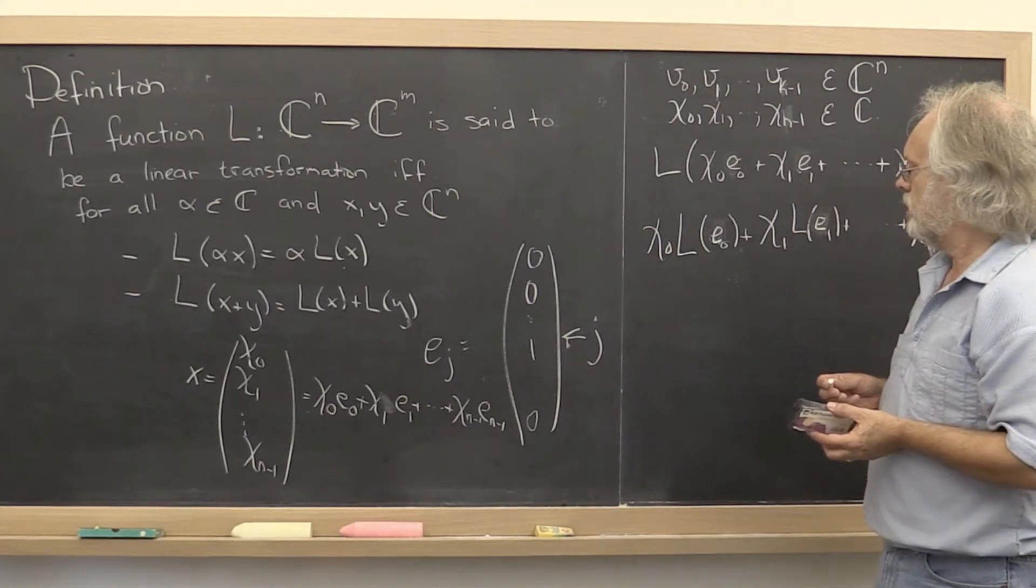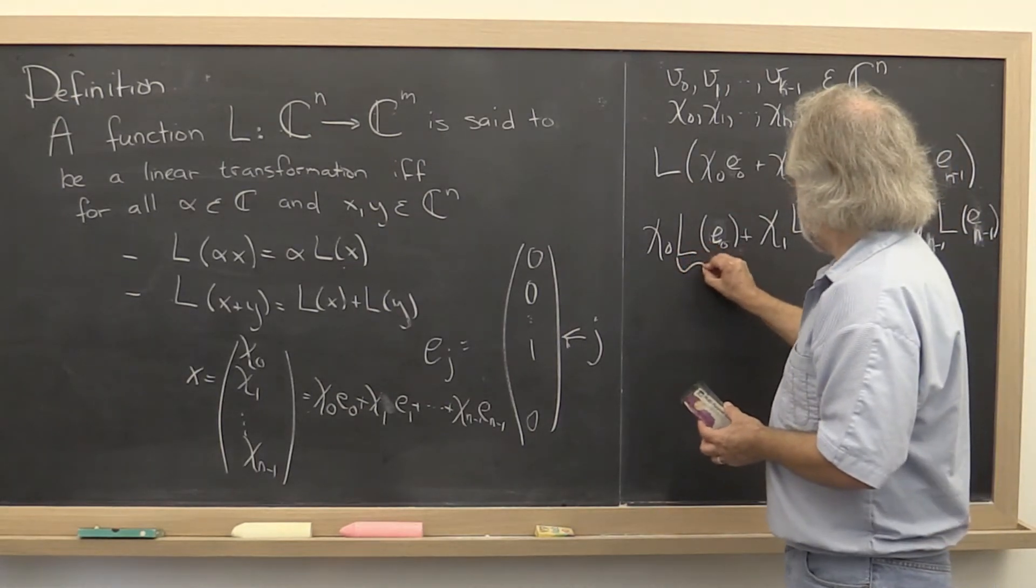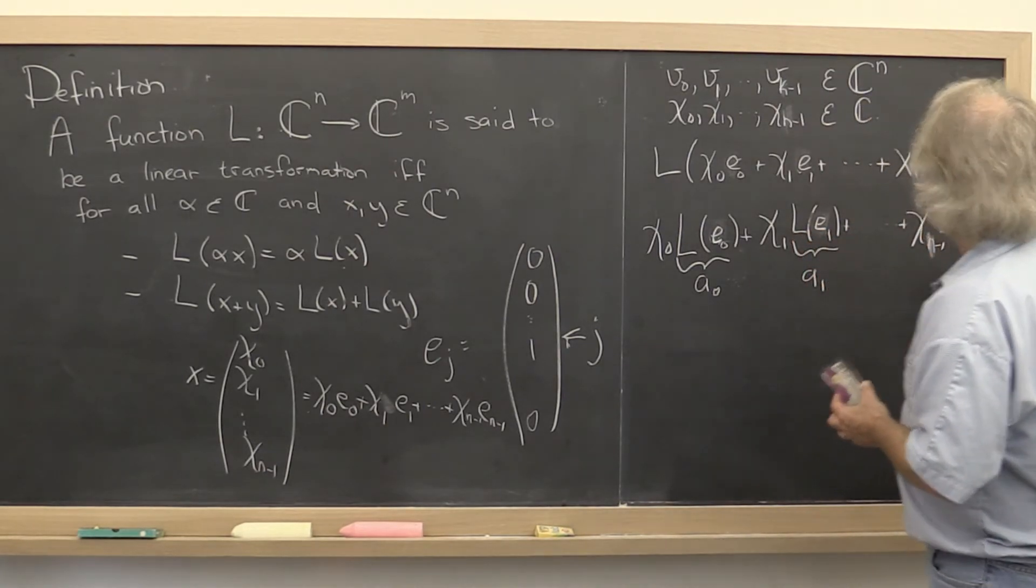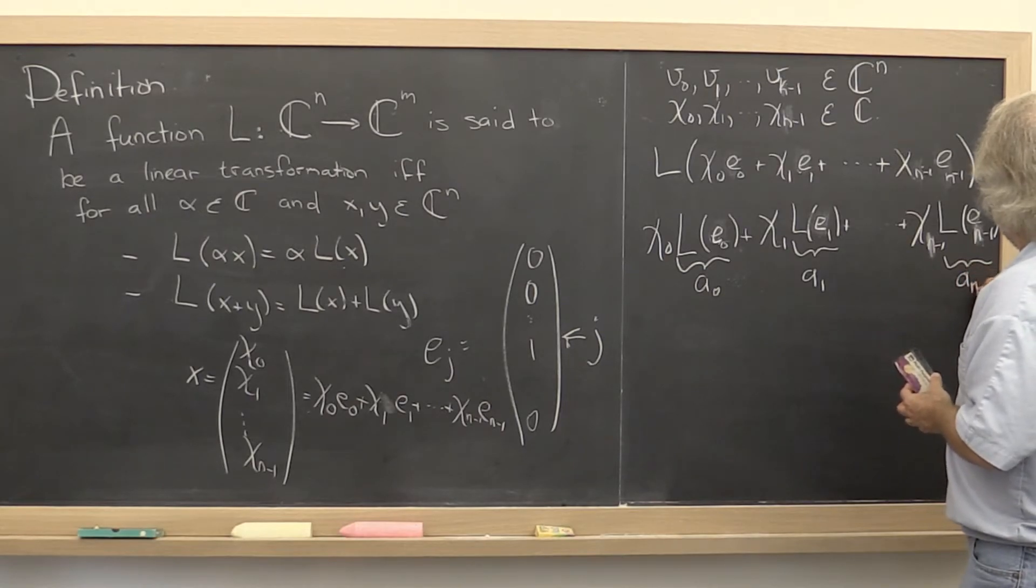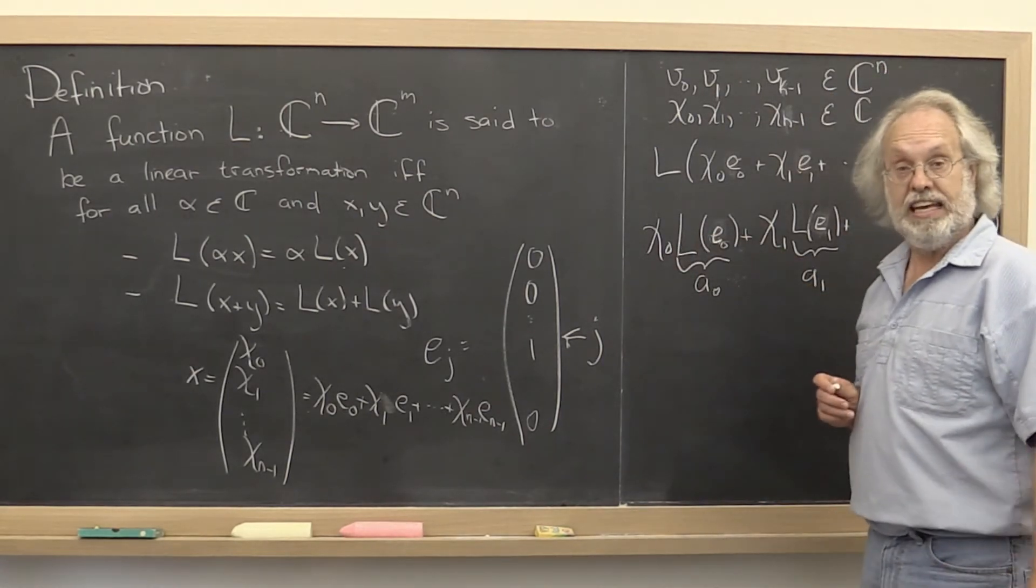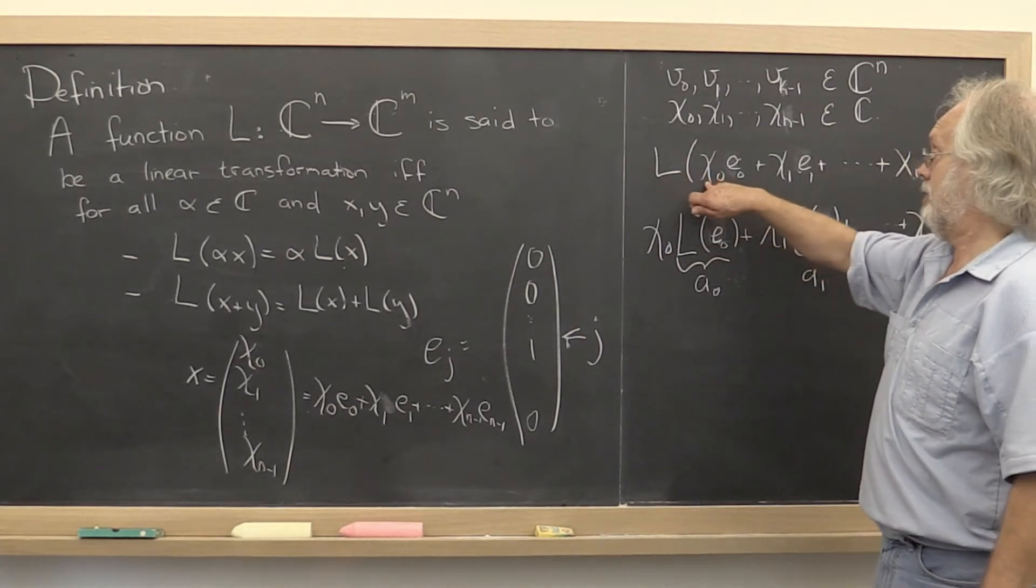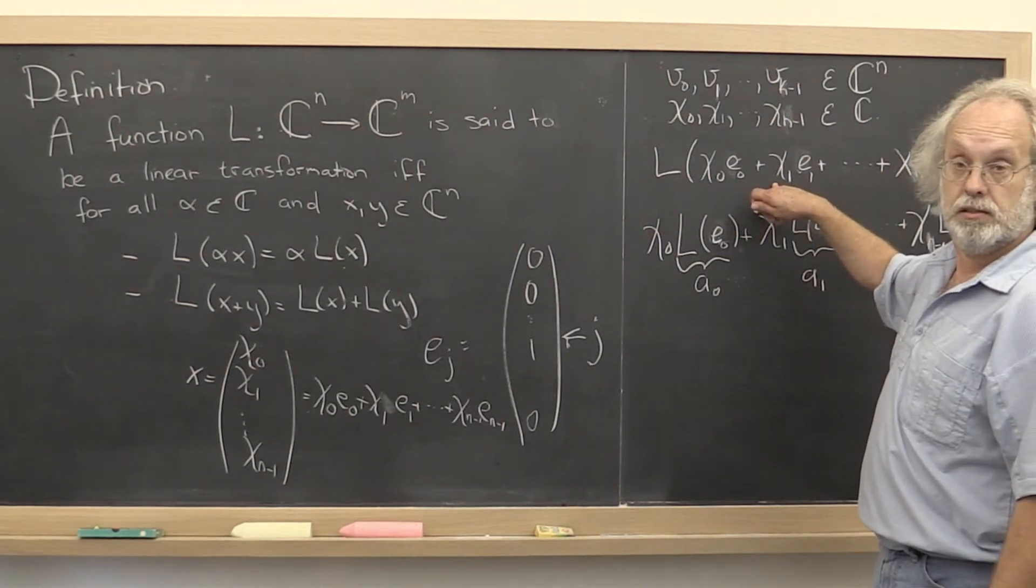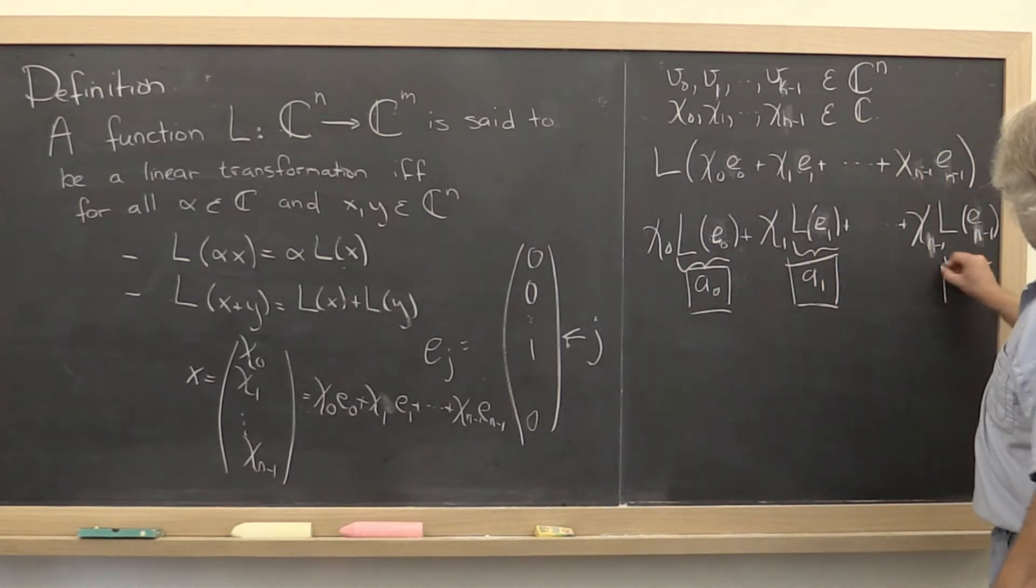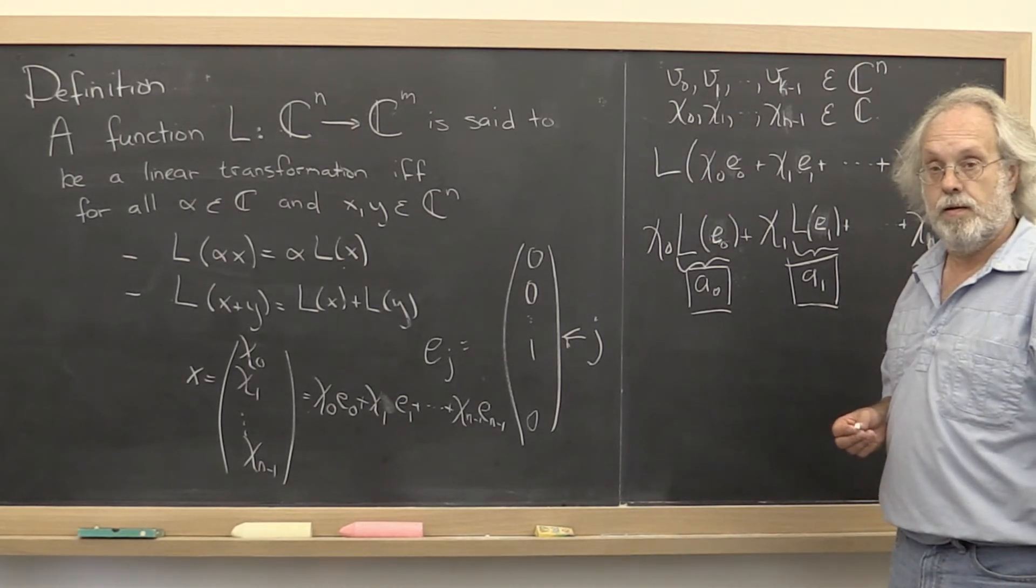Now why is that so important? Well, notice that if we simply take our standard basis vectors and we compute what vector comes out, and then we throw away all of our knowledge about what that linear transformation is, we still have all of the information needed in order to evaluate L of x. This is just L of x. All information about the linear transformation is encoded in these vectors right here, which you get by transforming the standard basis vectors.